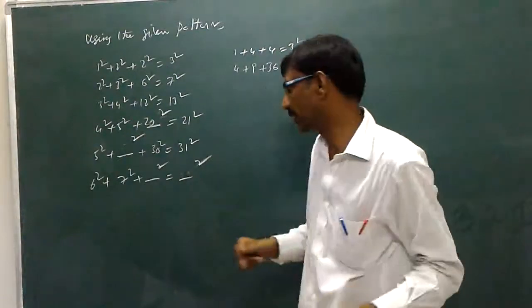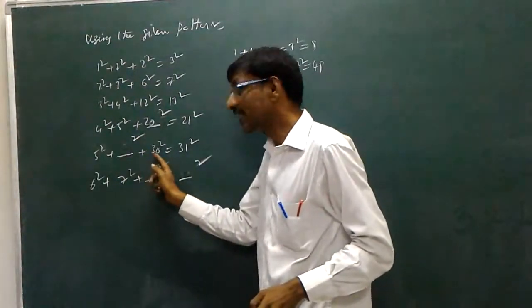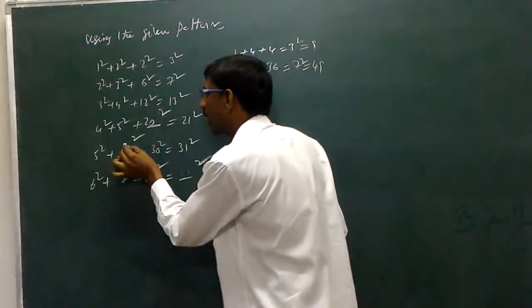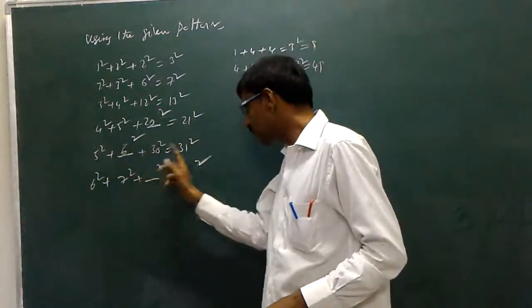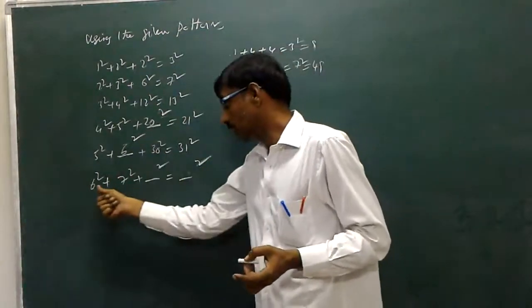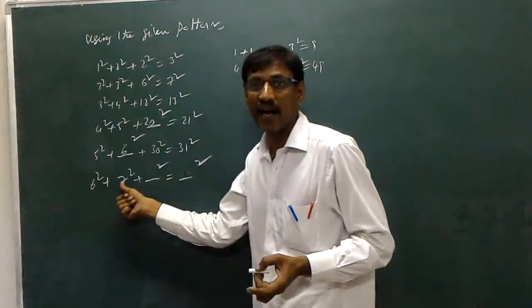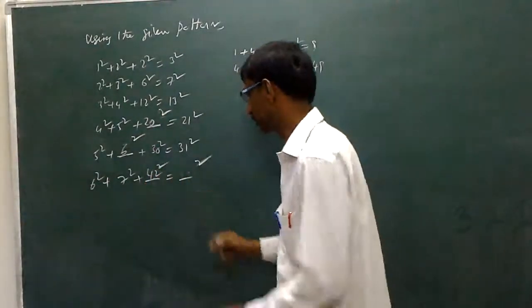Hundred percent now? Again, six square. Five sixes are thirty. Six sevens, forty-two. Forty-three.